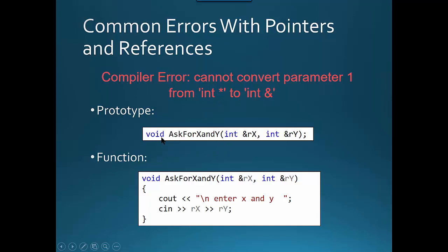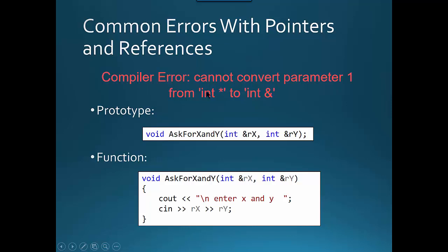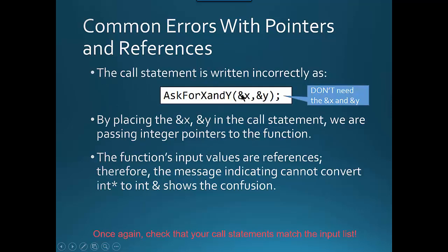That error might occur when you have a function defined to take a reference, but when you call it, you try to pass in an address. If you pass in an address, that's an address to an int — you can't convert an address to an int into a reference to an int. Remember, when you pass in a reference, you don't use the ampersand.